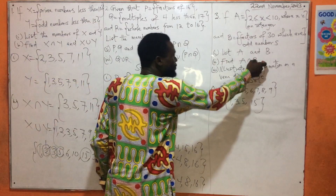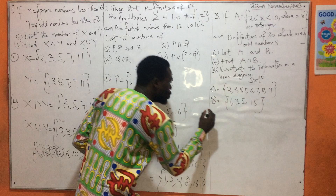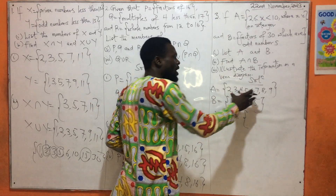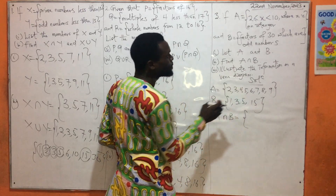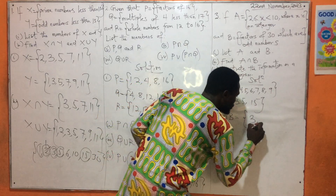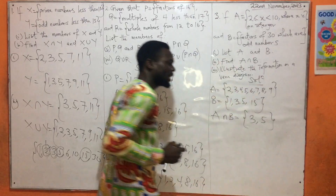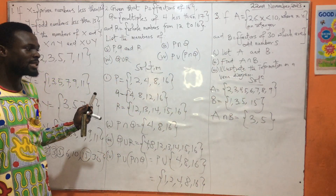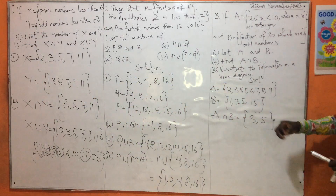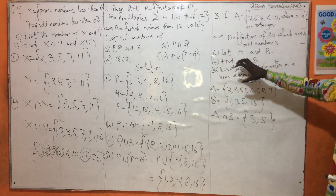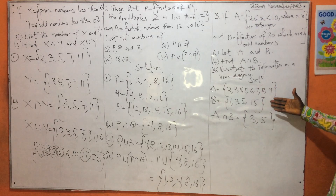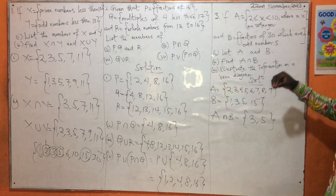After listing, we continue by finding A intersection B. A intersection B is what can be seen in both B and A. We can see 3 and we can see 5. So A intersection B is {3, 5}. That gives you the intersection. We can also find A union B by just combining the two sets.